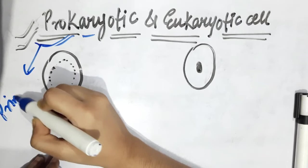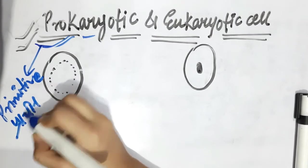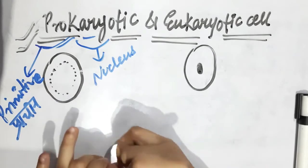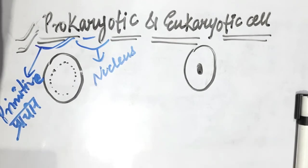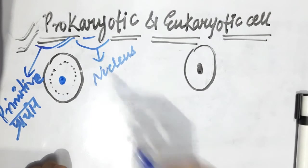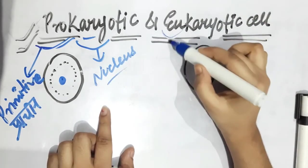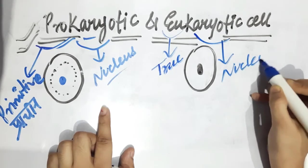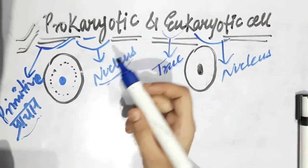Prokaryotic means primitive. 'Pro' means primitive or ancient, and 'karyon' means nucleus. The nucleus is like the brain of the cell — we study it when we study cell organelles. So prokaryotic means having a primitive type of nucleus. 'Eu' means true, and 'karyon' again means nucleus. So eukaryotic means having a true nucleus.